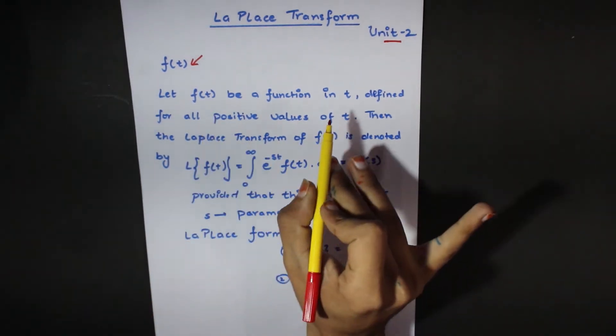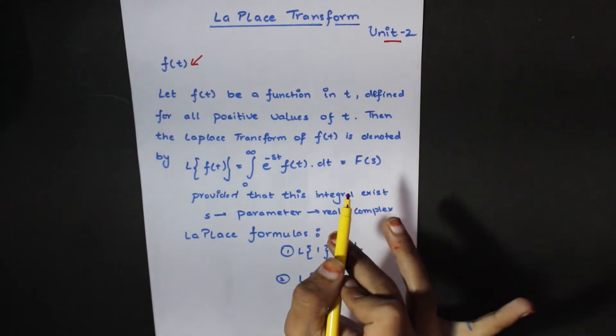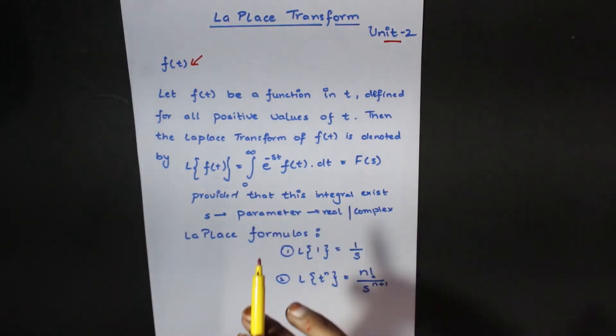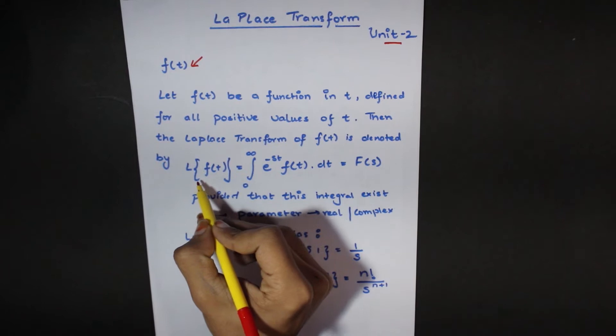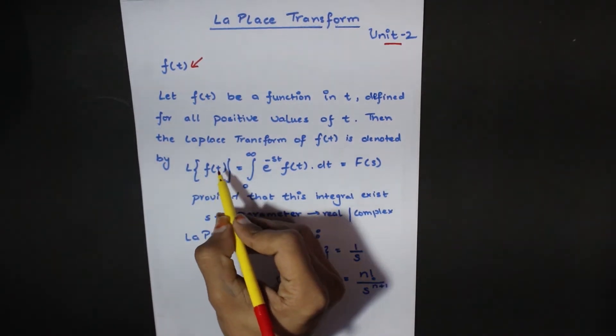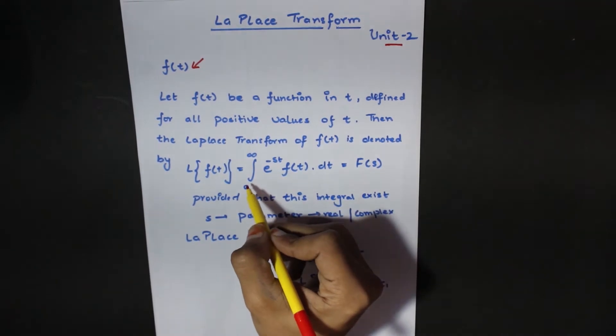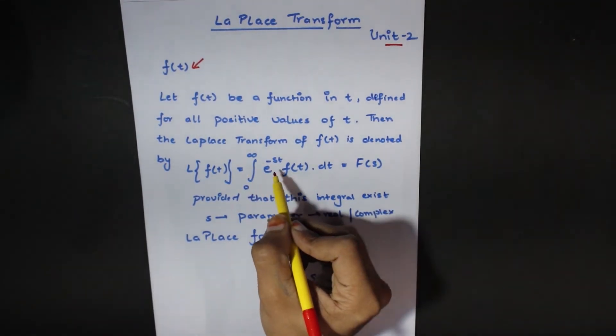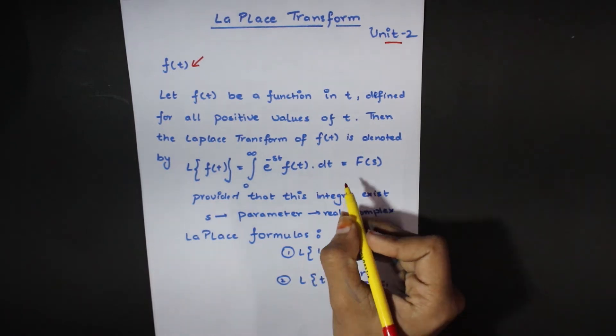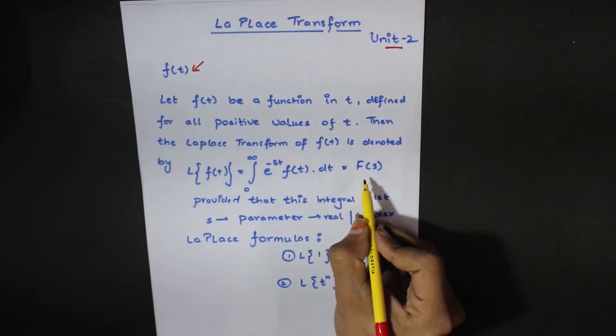Let f of t be a function in t defined for all positive values of t. Then Laplace Transform of ft is denoted by Laplace. Here we use curly brackets, f of t, i.e. function in t. We define integration from 0 to infinity, e to the power minus st into ft dt.